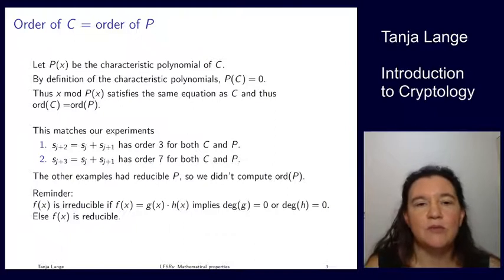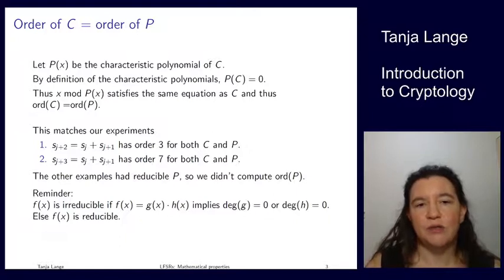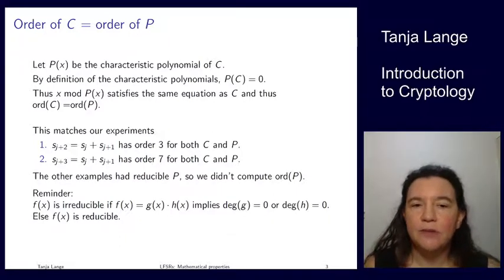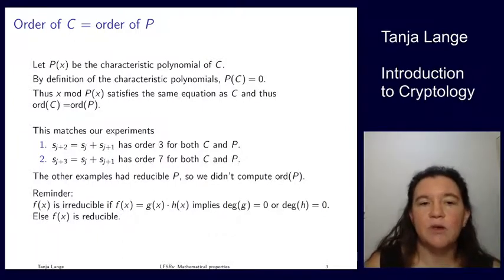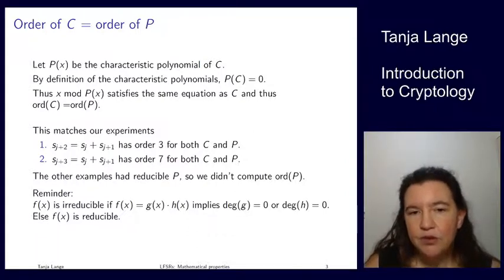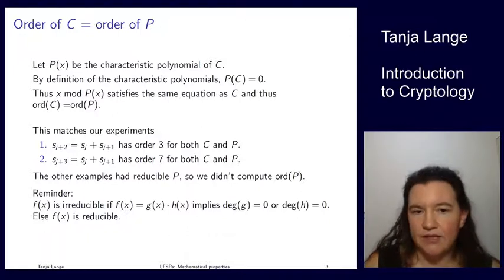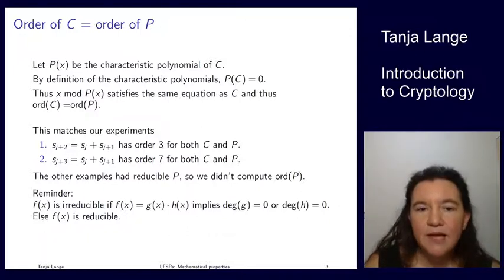And so in our experiments, the ones we looked at, so there was the one sequence, which was Sj plus 2 is equal to Sj plus Sj plus 1. And for that one, we observed that it has order 3 for the state update matrix, and also for this characteristic polynomial, and that the characteristic polynomial was irreducible. And also for the next one, which was characteristic polynomial X to the 3 plus X plus 1, that one is also irreducible, and the polynomial and the matrix set over 7. For the other examples that I gave you, those had a reducible characteristic polynomial, so I didn't ask you to compute the order of P.